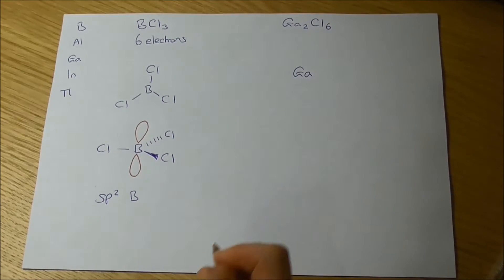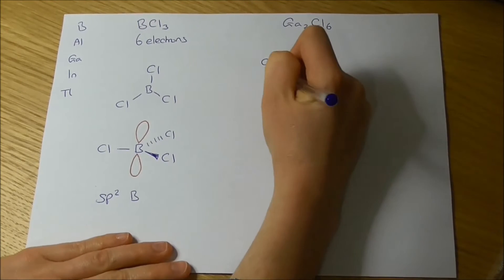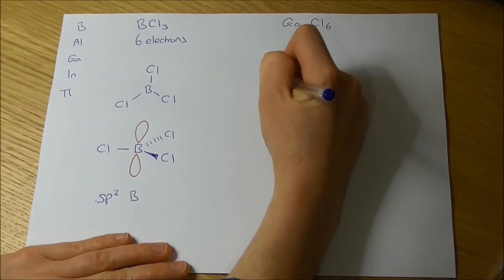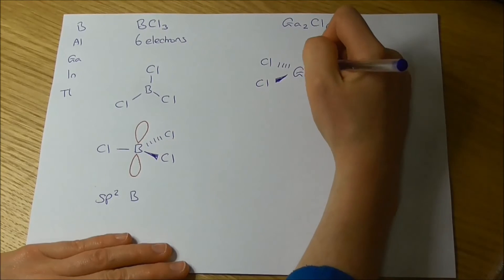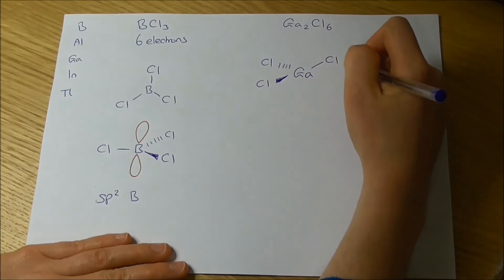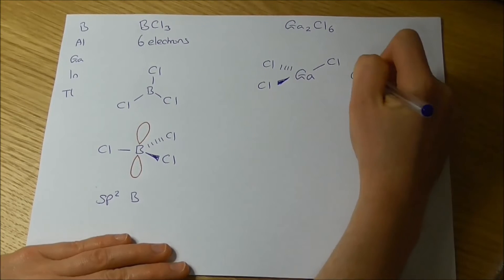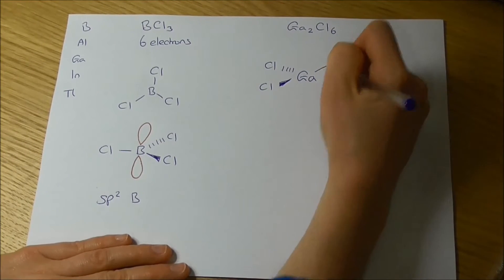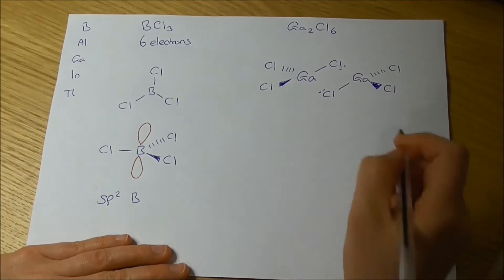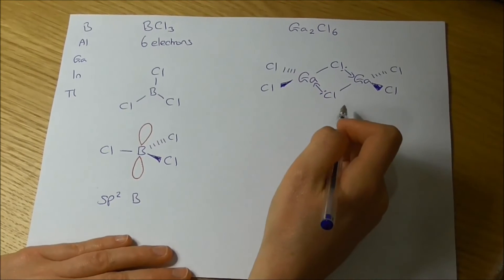What we have is two of the chlorines sitting here as terminal gallium-chlorine bonds. Then we have a chlorine up here, and then another gallium trichloride monomer sitting like this. And then what we have is lone pairs on these chlorines forming dative covalent bonds with the other gallium.